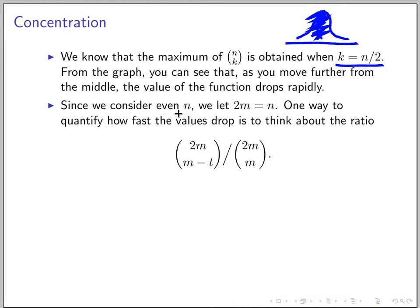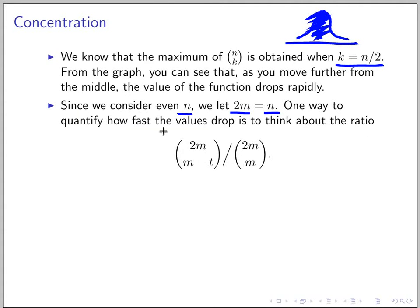Because we only consider even N, we'll use M instead. So we let 2M equal N. Then we can say 2M choose M, to mean 2M is N and M is N over 2. So we want to quantify how fast the value drops from the middle — the idea is to think about the ratio.